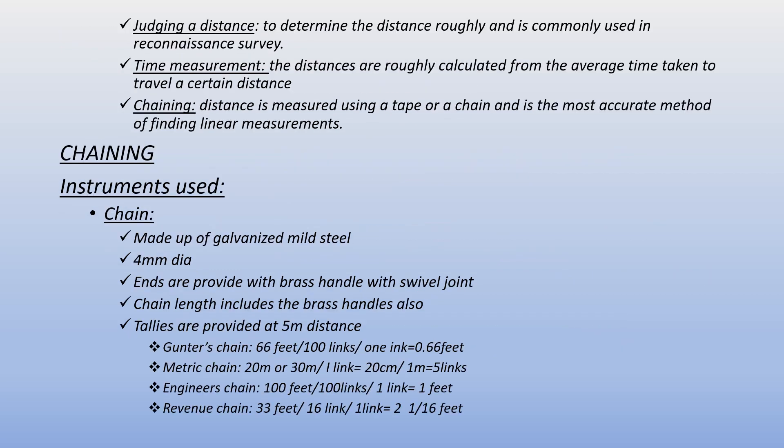Judging distance is commonly used in reconnaissance survey to obtain a rough value. Time measurement calculates distance roughly from the average time taken to travel a certain distance — distance equals velocity multiplied by time. The most accurate method is measuring with a tape or chain.